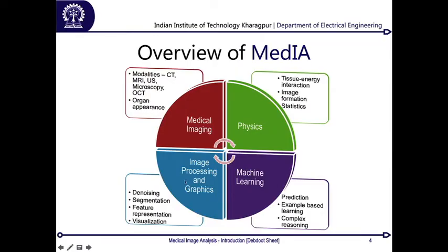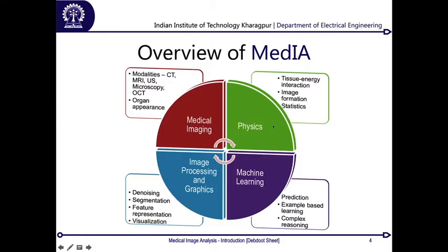Looking at this four-week course structure, each week covers one quadrant. Medical imaging physics and image processing/graphics each get one week, machine learning gets one week, and the final week binds everything together with real-life scenario examples — we take a challenging problem, solve it in class, and evaluate different approaches and their performances.